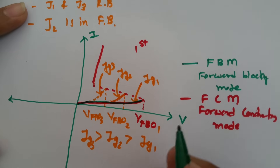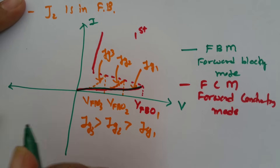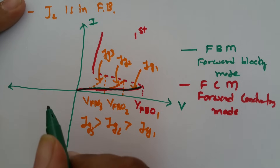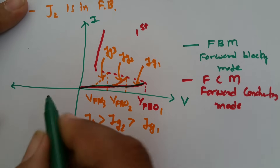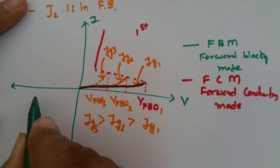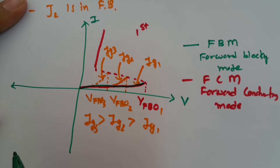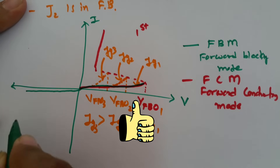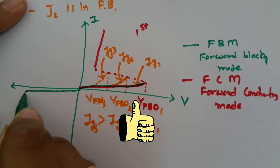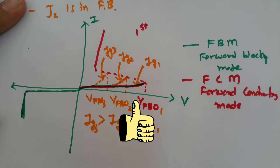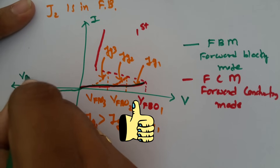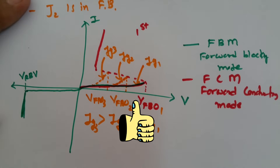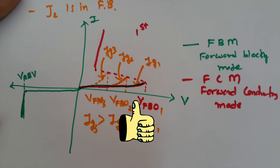In reverse bias, J1 and J3 junctions are in reverse bias, causing very minor — micro-ampere — current flowing from cathode to anode, which is called reverse blocking mode. After the breakdown of J1 and J3 junctions, a high amount of current starts to flow, similar to diode characteristics. This is the reverse break-over voltage, after which current starts to flow through the SCR. That is how SCR's forward blocking mode, forward conduction mode, and reverse blocking mode function.